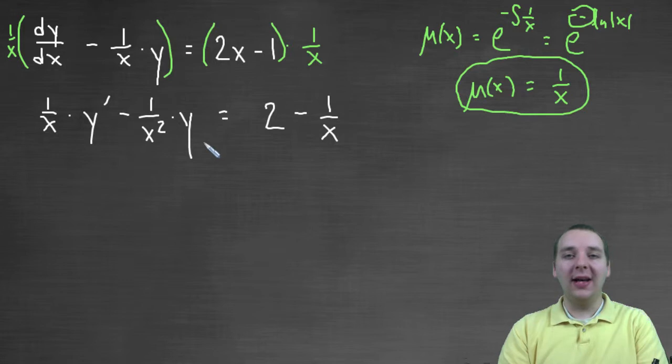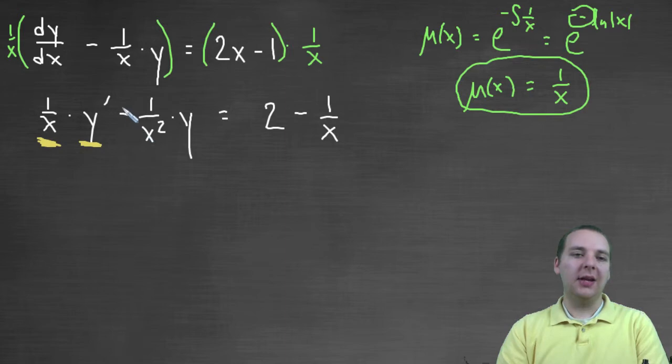Now, why is that helpful? What on earth did that do for us? Well something really really nice, look at the left hand side, in the steps I had mentioned something about the left hand side. Notice what we have here is we have the derivative of y times one over x, plus, I know it says minus, but let's consider it a plus, y times the derivative of one over x, which was negative one over x squared.